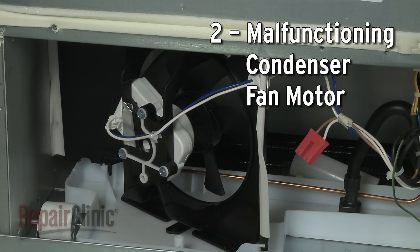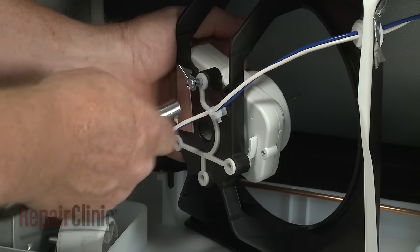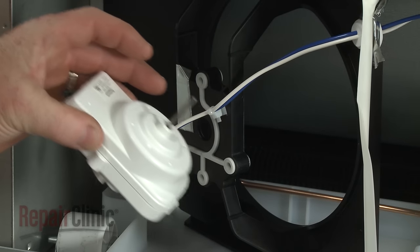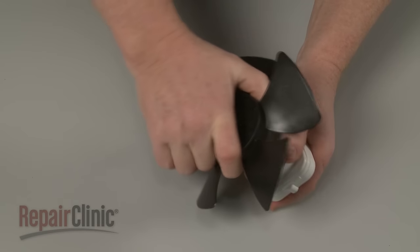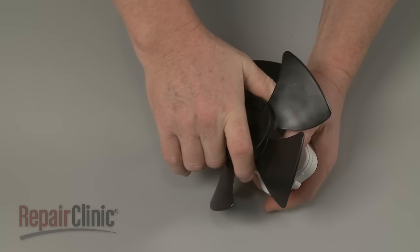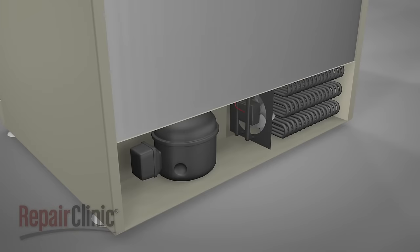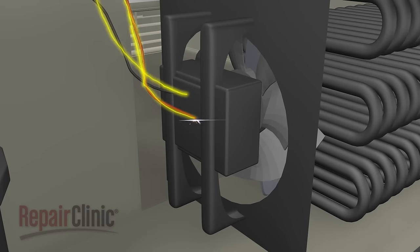A malfunctioning condenser fan motor could also prevent the refrigerator from cooling properly by failing to draw air past the condenser coils. The component can fail mechanically or electrically. A broken fan blade or a blade that does not turn freely could indicate a mechanical failure. If the motor is receiving power but doesn't run, then the motor has probably failed electrically.